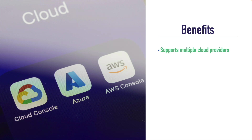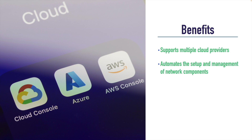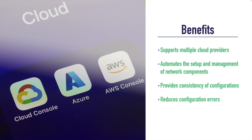Number one, it is very cloud agnostic. It does not just support Amazon's AWS — it supports lots of cloud providers, and I'm showing you just a few of those on the screen. What it's going to do for us is automate the somewhat tedious and error-prone task of setting up and managing virtual network components. That's going to give us the benefit of being more consistent in our configuration. If I'm setting up an EC2 instance now and do another one tomorrow, I might not remember all of the specific settings I used yesterday. But Terraform is going to give us consistency of configuration. And we're only human — we might mistype something or misselect something on a drop-down menu. So this is going to help reduce configuration errors.